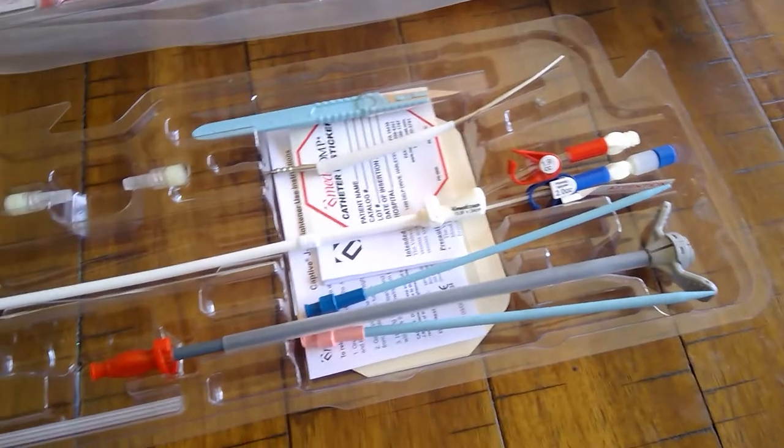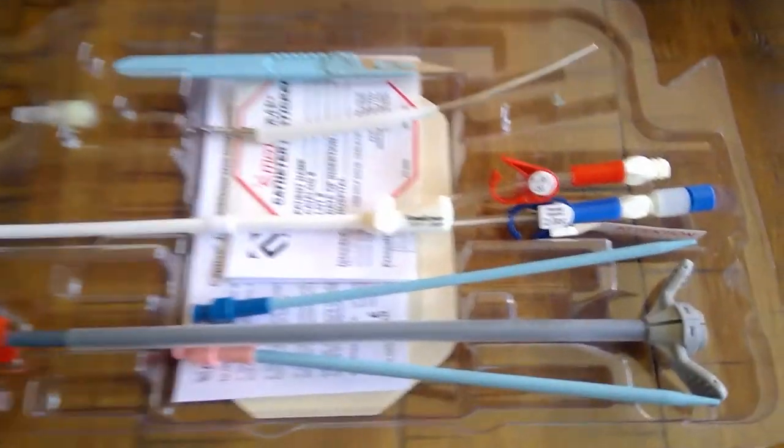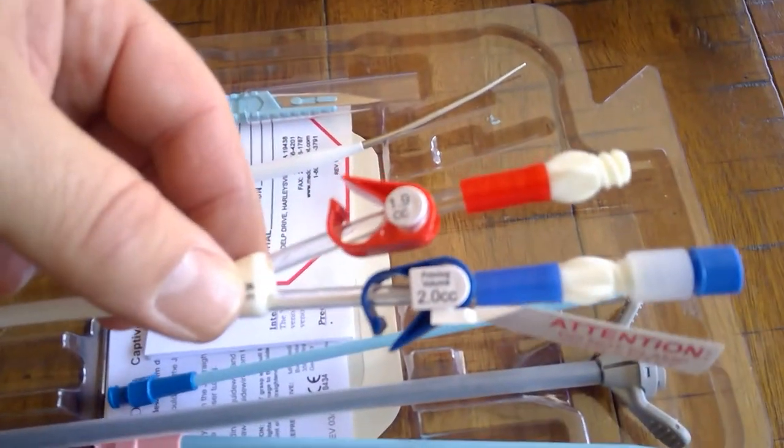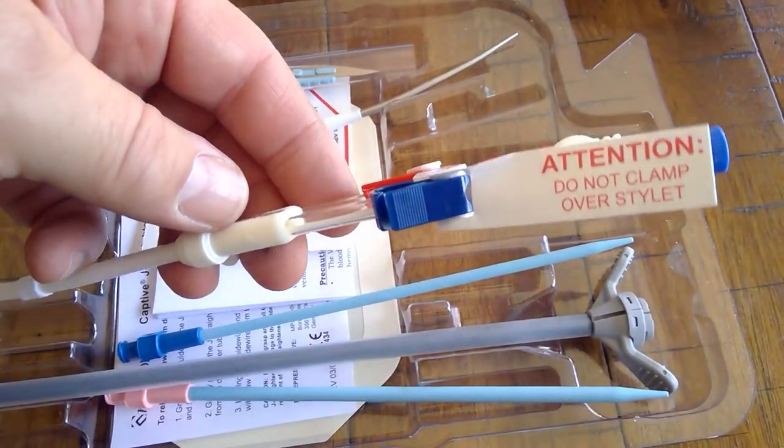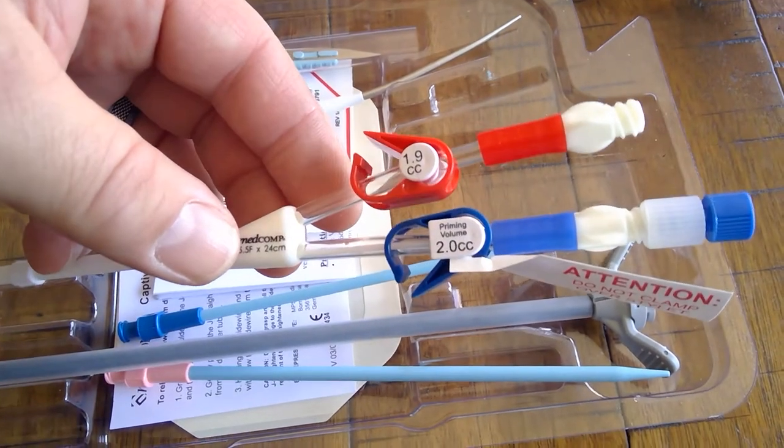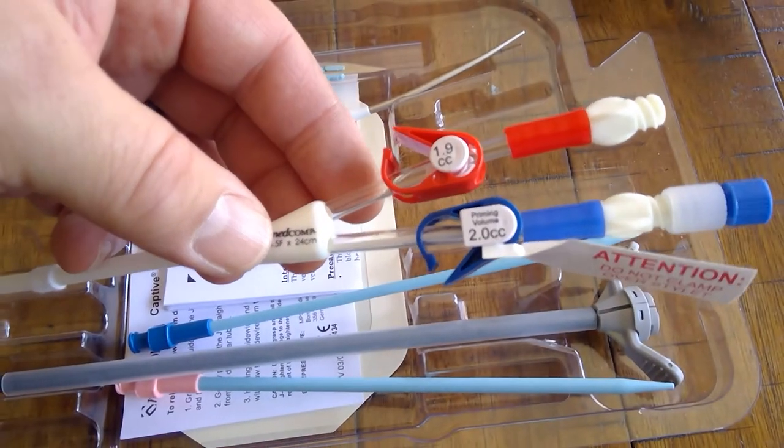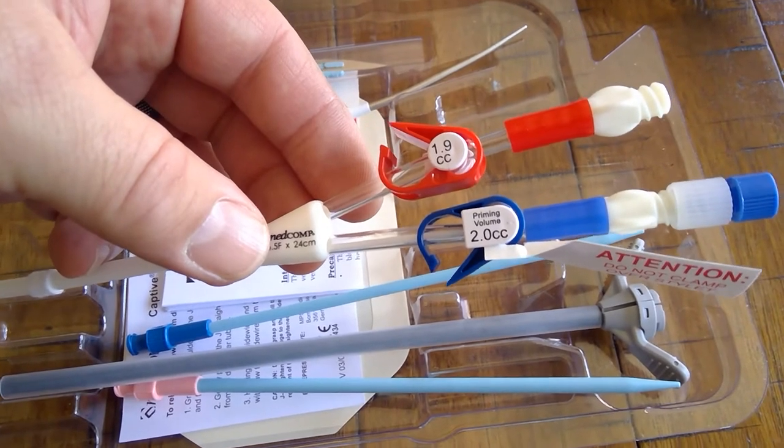Interesting part about this dialysis catheter is it comes with an exchange dilette already inserted through the blue lumen. It has a little tag that says do not clamp over the stylet. You do not want to clamp over that plastic stylet because you will kink it and it'll be hard to get over the guide wire.